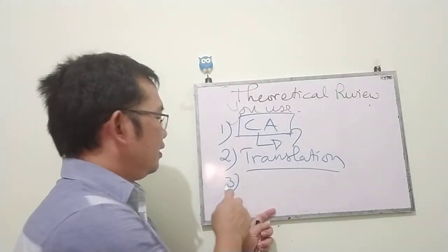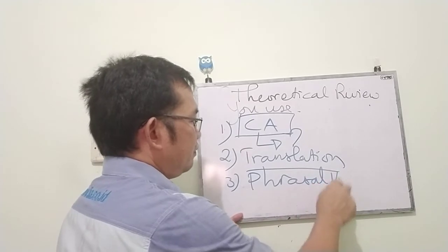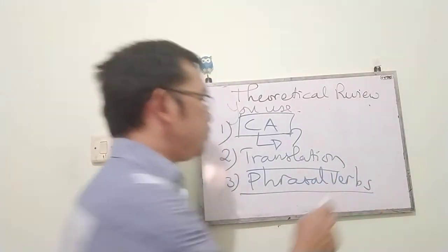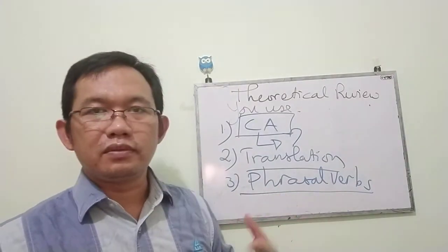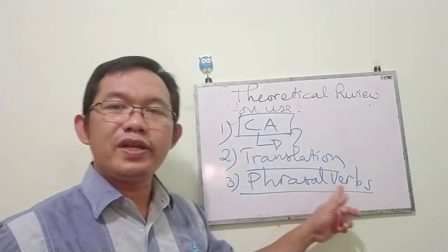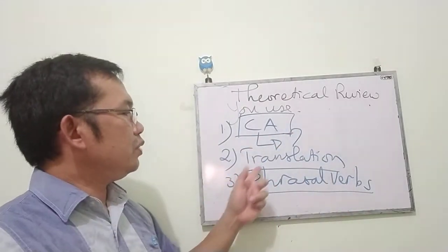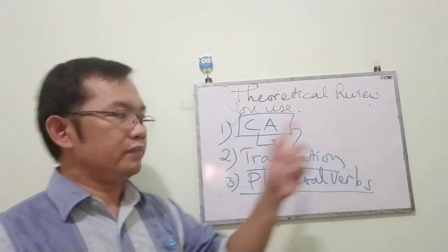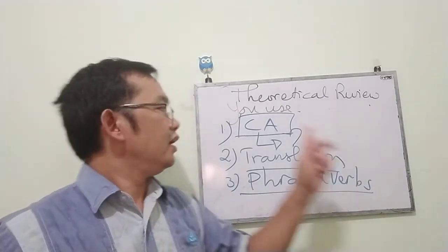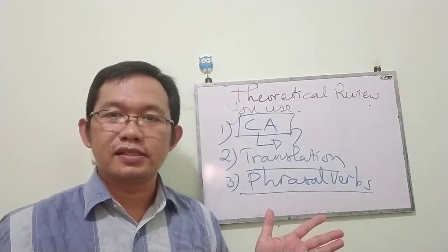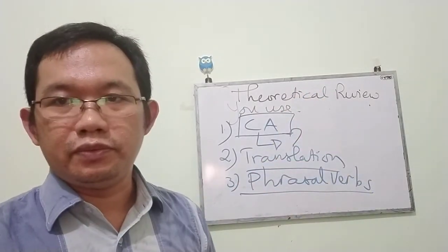The data you take are phrasal verbs, so you also explain the theory about phrasal verbs. If you are doing research on the translation of phrasal verbs based on componential analysis, you explain what translation is — the theory of translation — you also explain the theory of phrasal verbs, and the theory of componential analysis. These are the main points, the main content of the theoretical review.